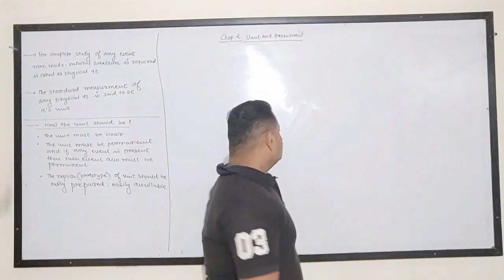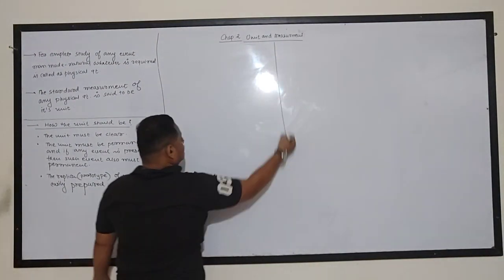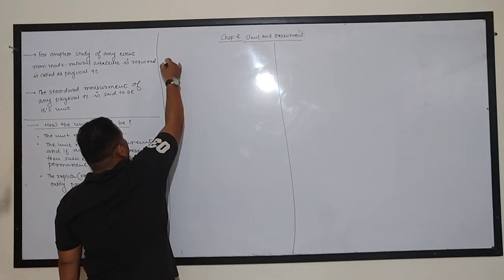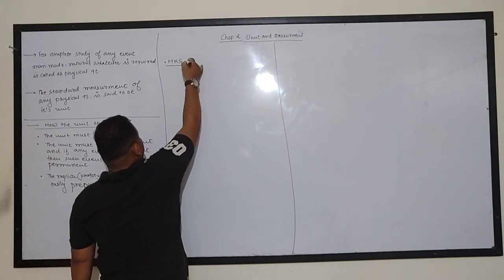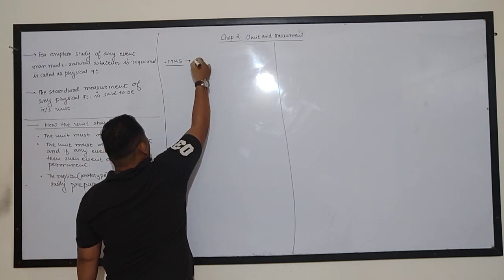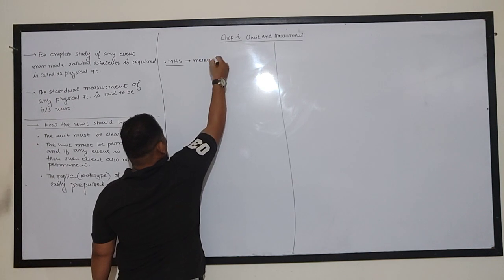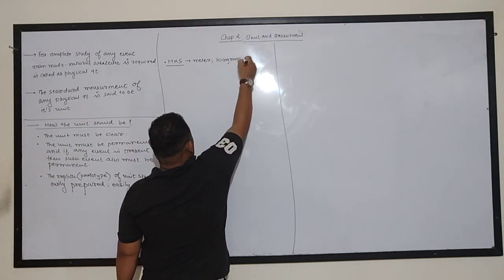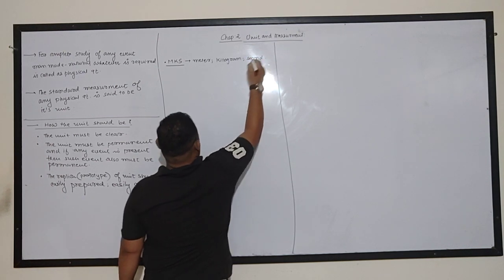Accepting these particular norms, different types of unit systems internationally and globally exist. The first unit system is called the MKS unit system. In the MKS unit system: length's unit is meter, mass's unit is kilogram, and time's unit is second.